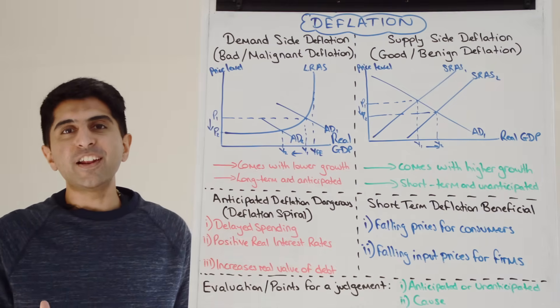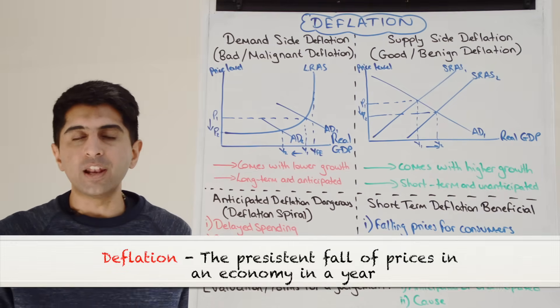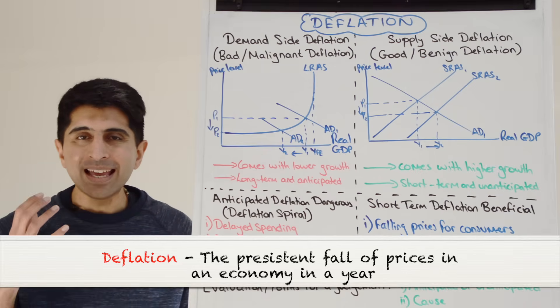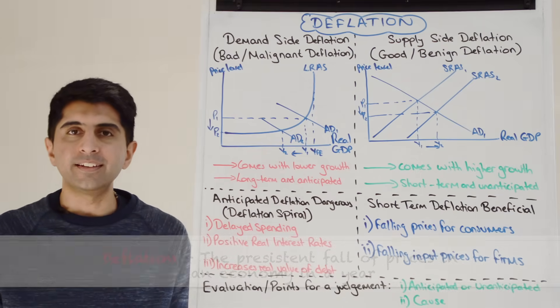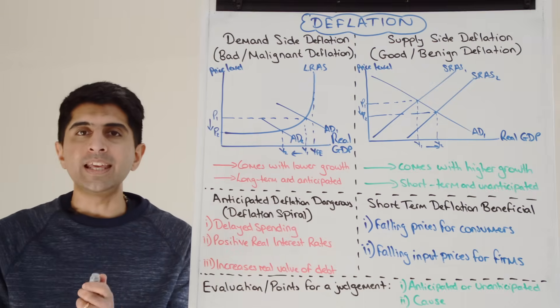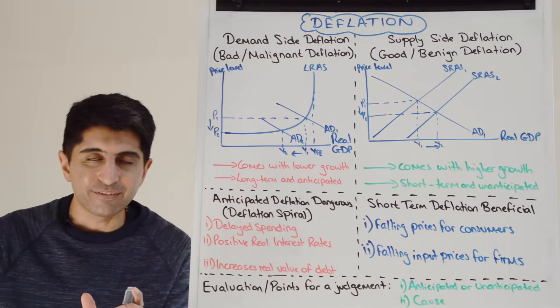Deflation is the persistent fall in prices in an economy in a year. It's the complete opposite to inflation and it occurs when the inflation rate is negative.